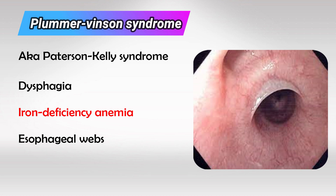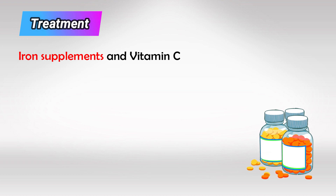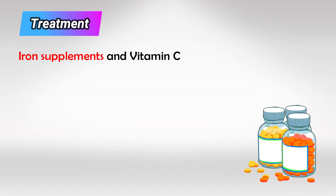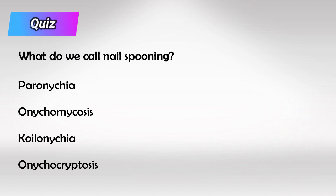We treat Plummer-Vinson patients as we treat any patient with iron deficiency anemia. The treatment is iron supplements, and sometimes we use vitamin C as it helps with absorption of iron. But before we start any medical treatment, we have to treat the cause. So if we know that the patient has bleeding in their intestine, as evidenced by fecal occult blood, or if the patient is malnourished, we should treat the cause before treating the patient for anemia.